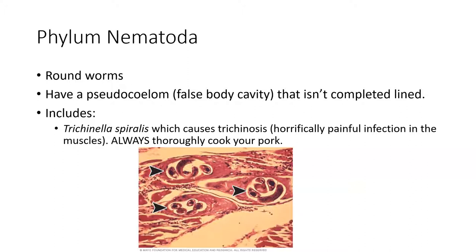Moving to phylum Nematoda — round worms. We still have bilateral symmetry, but now we're starting to get a body cavity: a space between the digestive system and the body wall. However, this space is not completely lined like ours, so they have a pseudocoelom, or false body cavity. That is their hallmark characteristic. Round worms are called round because of their circular cross-section, though in this picture the worm has encysted in a person's muscle and is coiled in a ball.